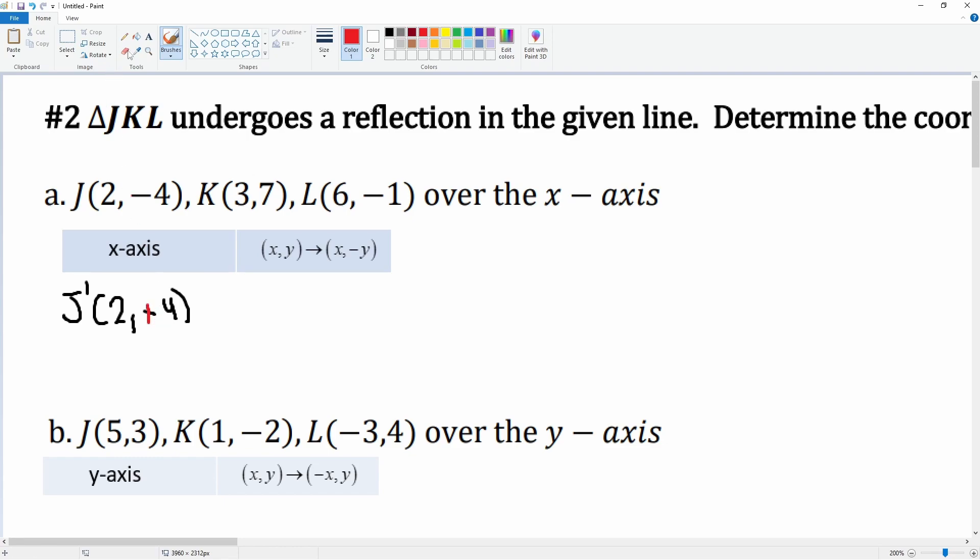Next we have K prime: 3 comma 7, but that 7 is now a negative 7. L prime: 6 comma negative 1, but that negative 1 is now a positive 1. So those would be your new points based on that reflection on the x-axis.